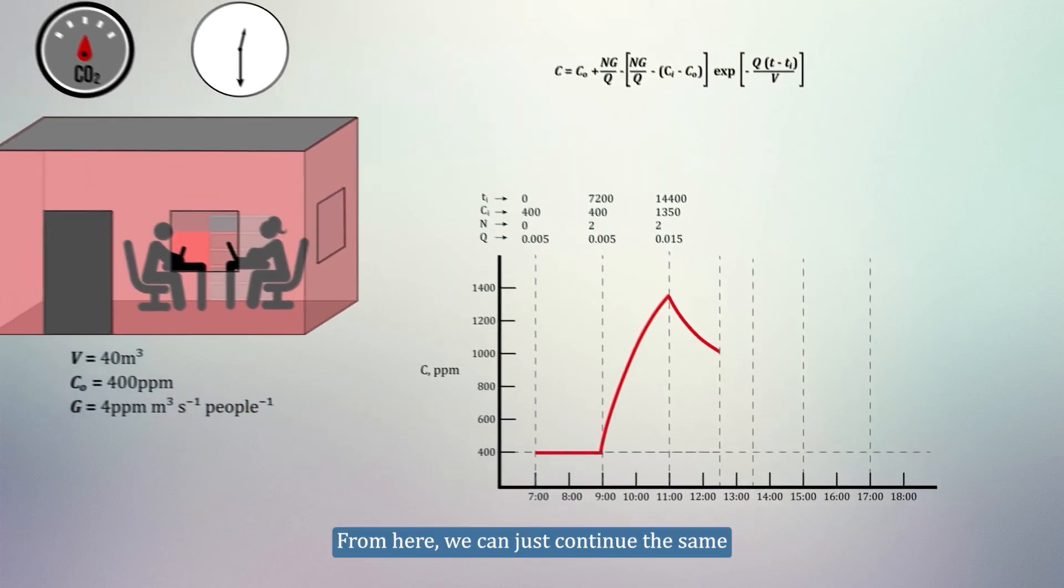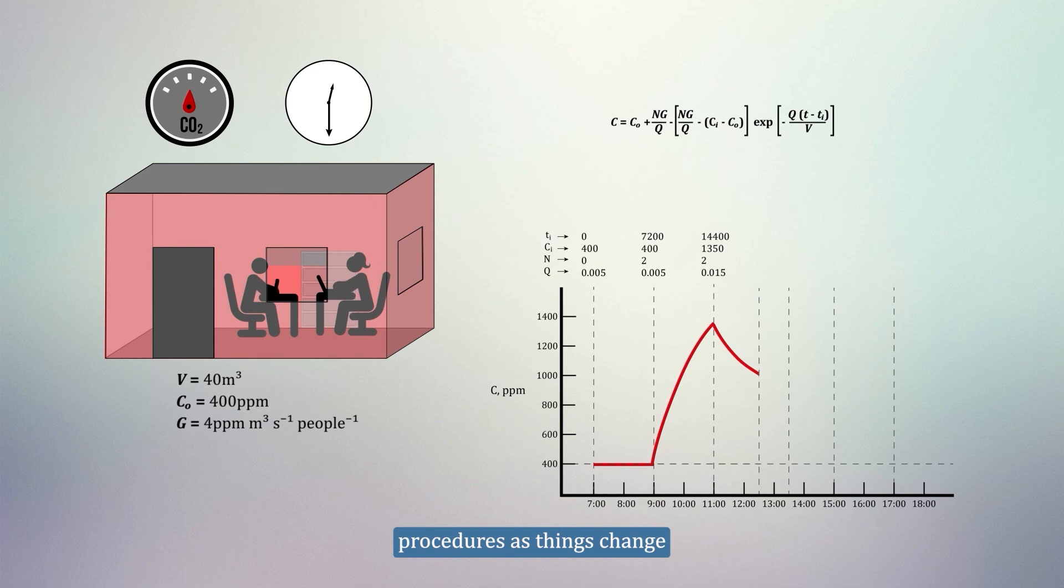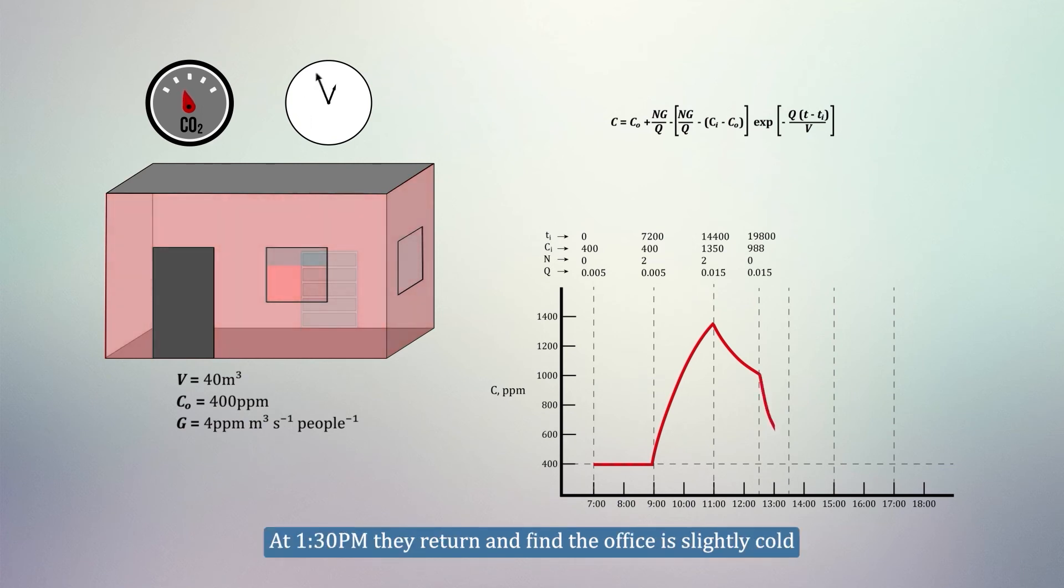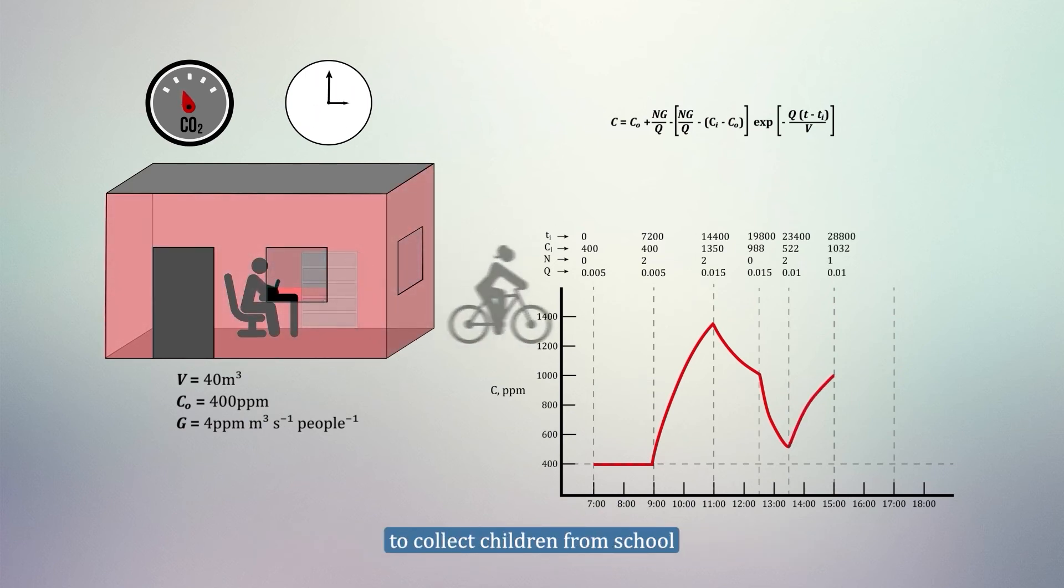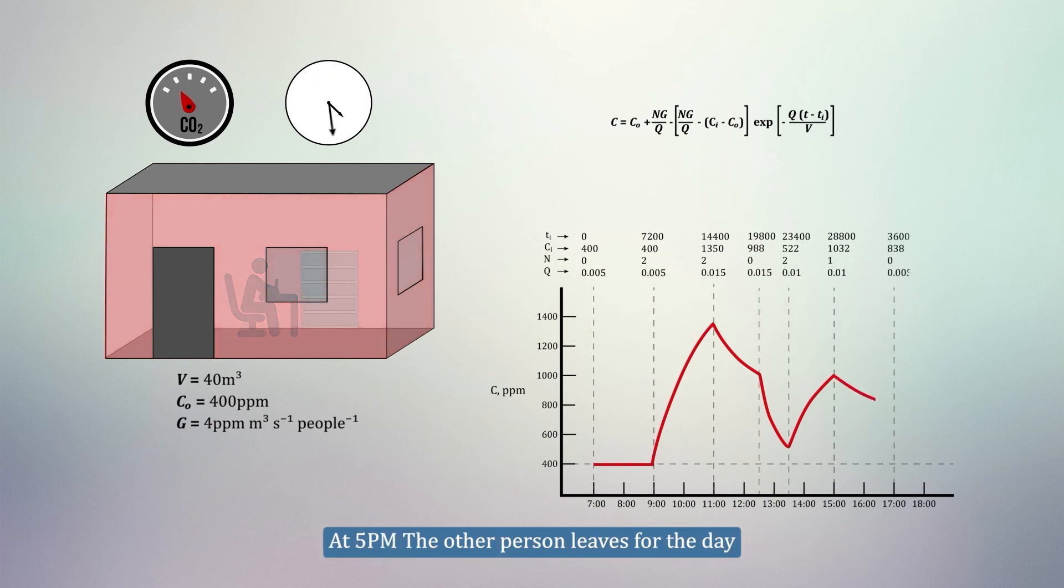From here, we can just continue the same procedures as things change. At 12.30, both people leave for a 1 hour lunch break, and leave the window open. At 1.30, they return, and find the office is slightly cold, so close the window slightly, reducing the ventilation rate to 0.01 m3 per second. At 3, one person leaves for the day to collect children from school. At 5pm, the other person leaves for the day and closes the window, so Q returns to 0.005 m3 per second.